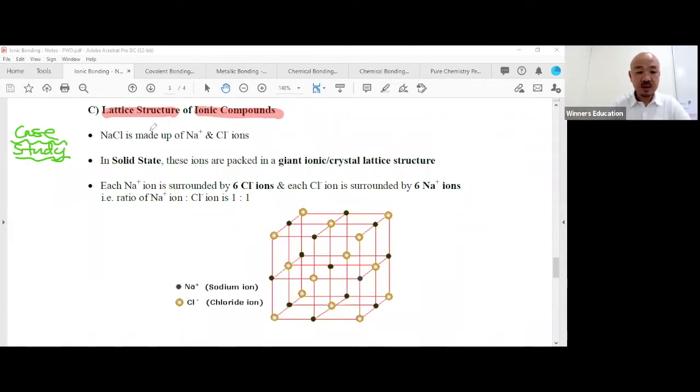Sodium chloride, once again, is made up of sodium and chloride ions. In the solid state, the ions are packed in a giant ionic or crystal lattice structure. Choose one word, both words are correct. So whichever your school uses, just use it. In the national exam, just use it. Don't write both. That shows that you're very unstable. You're memorizing and you don't know. So only use crystal lattice structure.